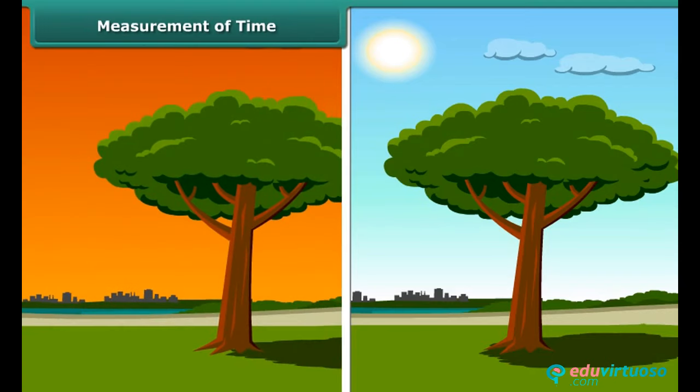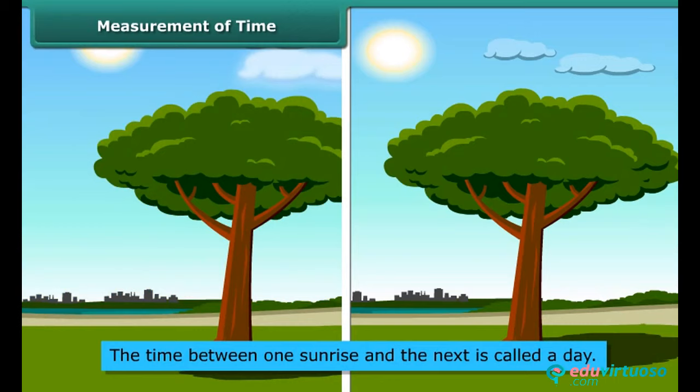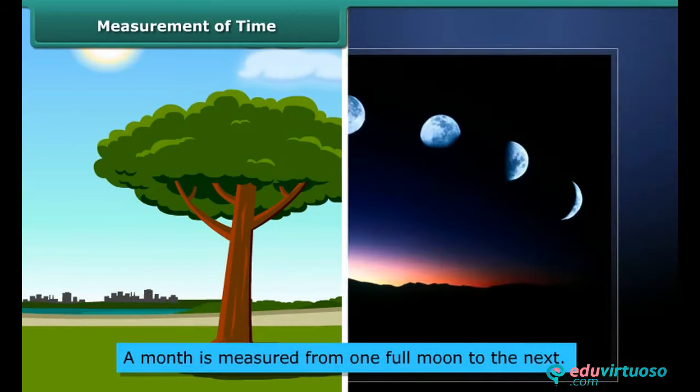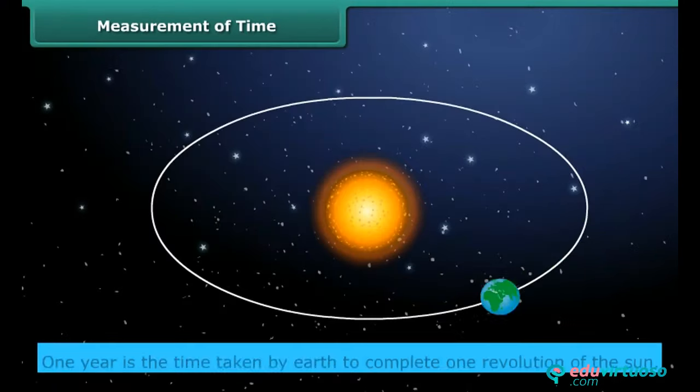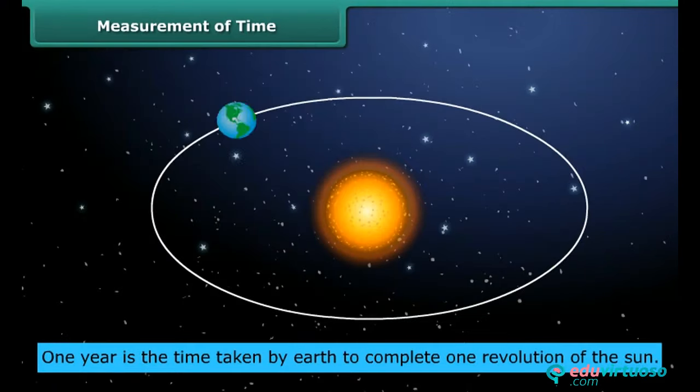For example, sun rises every day in the morning. The time between one sunrise and the next is called a day. Similarly, a month is measured from one full moon to the next. One year is the time taken by earth to complete one revolution of the sun.